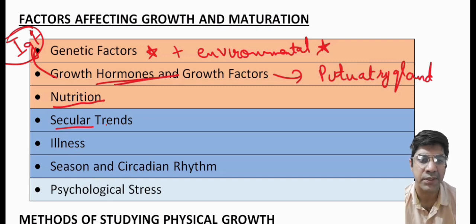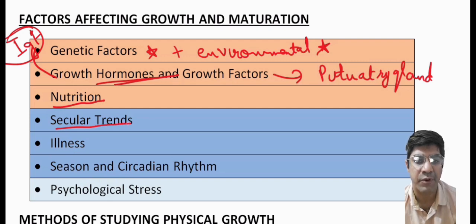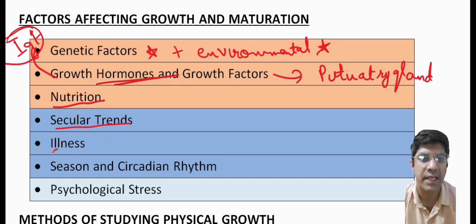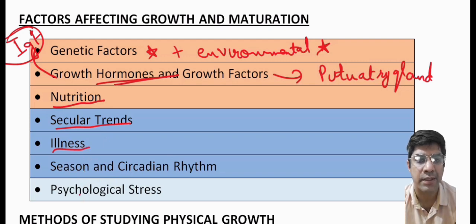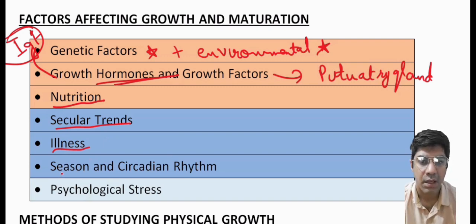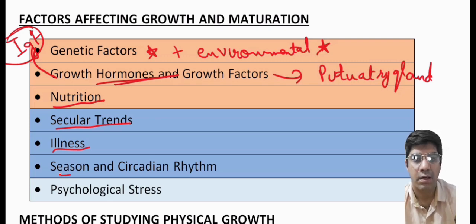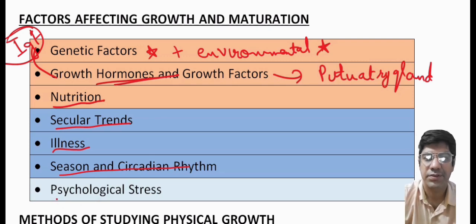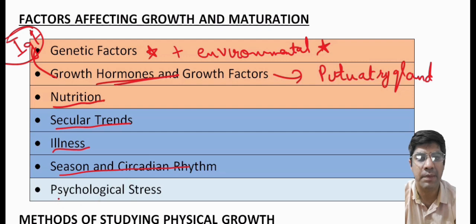Malnutrition can lead to stunted growth, delayed maturation, and various health problems. Secular trends — changes in physical growth patterns and maturation — are influenced by factors like improvement in nutrition and healthcare. Chronic illness and infections can inhibit growth by affecting nutrient absorption and utilization. Seasonal and circadian rhythms can influence growth; environmental factors like exposure to natural light, temperature, and variation in sleep patterns can impact the timing of growth events like puberty. Stress — including trauma, abuse, and chronic stress — can also impact growth and maturation.